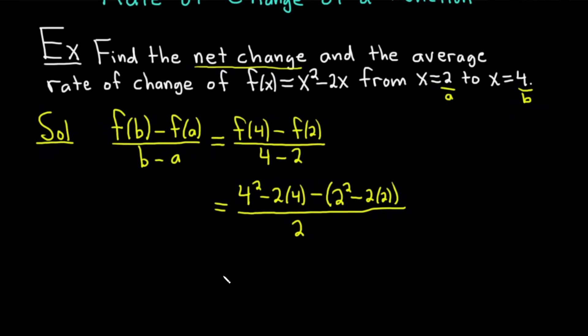This is equal to, let's see, this is 16 - 8, right, because 4² is 16, 2 times 4 is 8, minus. And then this is, oh wow, this is 4 - 4, right? That's great. It's going to be 0. That worked out nicely. Over 2. Very nice.